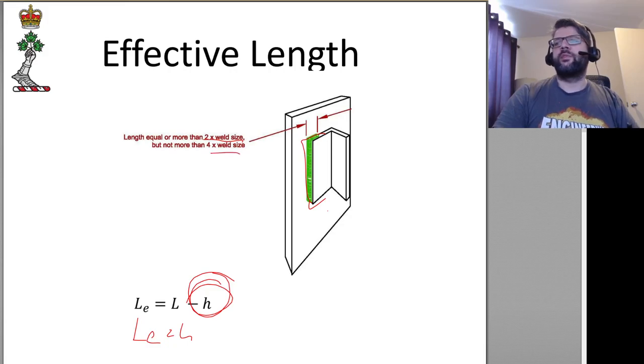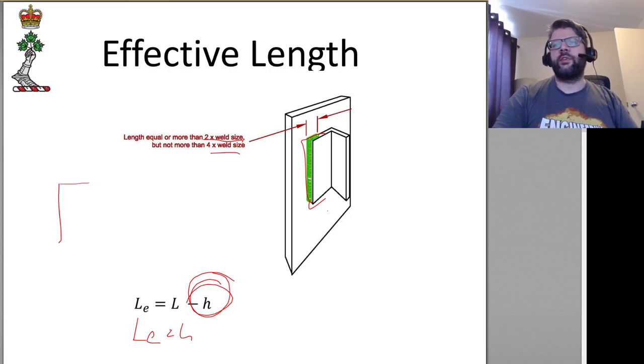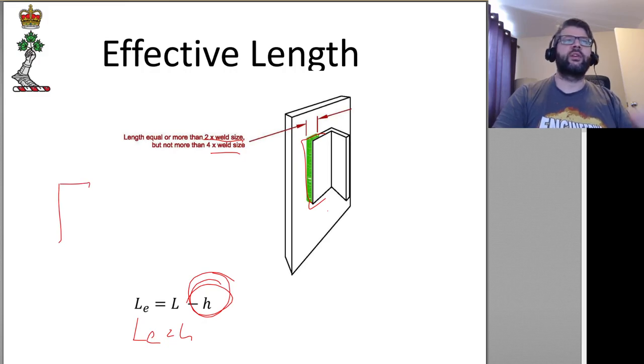Not more than 4 times H. If we start getting 4 times H, then we really should be considering the length of the weld including around the corner, and then just subtract the H on that end.